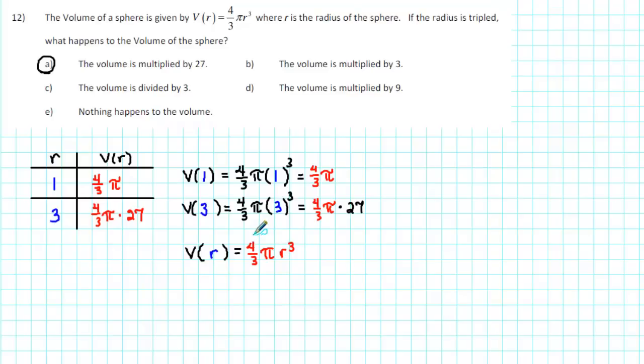We want to determine what happens when the radius is tripled. Well, to triple the radius, we need to multiply the radius by 3, and when we do so, the new radius is 3r. So let's determine the volume when the radius is 3r.